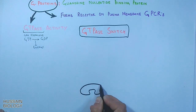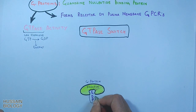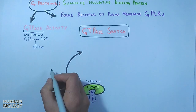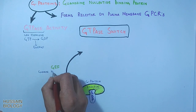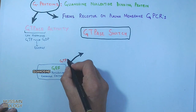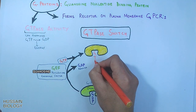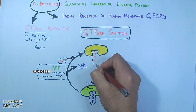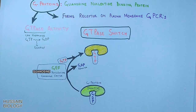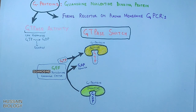Here in this diagram we can see the G-protein which is having GDP bound, and this GDP-bound G-protein is the inactive protein. Now here comes the GEF, which is the guanosine nucleotide exchange factor. This factor exchanges GDP for GTP, and now we have the G-protein bound to GTP, which is the active form. But once the active G-protein mediates the signal, it needs to get into its inactive state in order to shut down the signal.